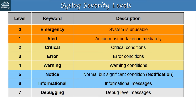Before looking at some examples of syslog messages, let's cover the different syslog severity levels. These levels indicate how serious, how severe, the event is. For example, something like a serious hardware failure is more severe than an OSPF neighbor moving to the full state. There are 8 severity levels. Each severity level has a number — 0 being the most severe and 7 being the least severe — as well as a keyword and a brief description taken from the official RFC for syslog.